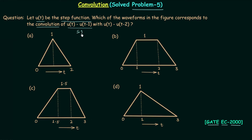Let's say u(t) - u(t-1) is the first signal, and u(t) - u(t-2) is the second signal. So we are convoluting signal 1 with signal 2 and we need to plot the waveform of the resultant signal. All four options have different waveforms, so it is important to get the waveform of the resultant signal so that you can match the correct option.